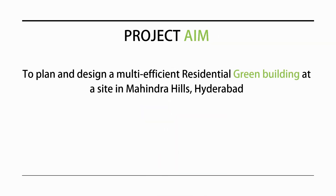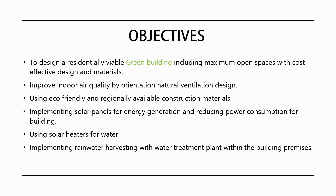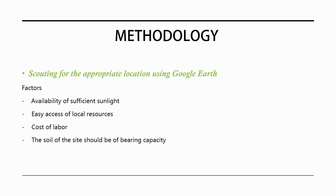The aim of this project is to plan and design a multi-efficient residential green building at a site in Mahindra Hills, Hyderabad. The objectives include designing a residentially viable green building with maximum open spaces, cost-effective design and materials, improved indoor air quality through orientation and natural ventilation, using eco-friendly and regionally available construction materials, implementing solar panels for energy generation, reducing power consumption, using solar heaters for water, and implementing rainwater harvesting with a water treatment plant within the building premises.